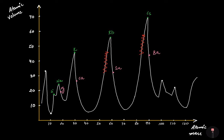Noble gases come just before the alkali metals. Neon comes before sodium, argon comes before potassium, krypton comes before rubidium, and xenon comes before caesium — all on the ascending portions of the curves.